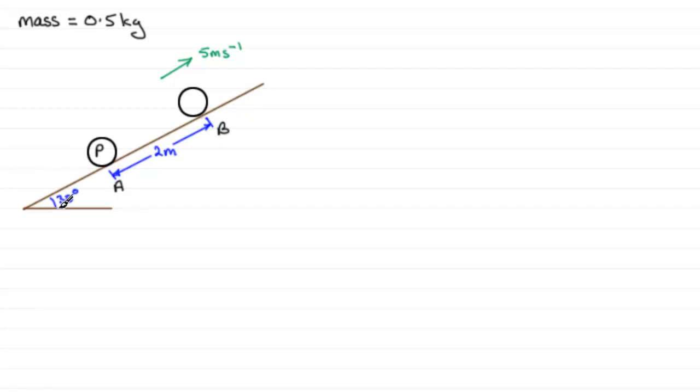This plane is inclined at an angle of 30 degrees to the horizontal. We're told that this distance AB is 2 meters and the particle P passes through this point B with a speed of 5 meters per second, which I've added on.